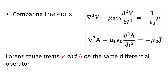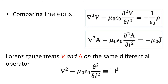Comparing these two equations, we define the operator del-squared minus mu-zero epsilon-zero partial-squared by partial t-squared acting on V equals minus rho by epsilon-zero, and acting on A equals minus mu-zero J. We define this as an operator represented by a box — box-squared equals del-squared minus mu-zero epsilon-zero partial-squared by partial t-squared. This is a differential operator called the D'Alembertian operator.